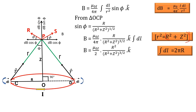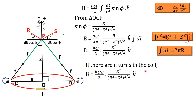Therefore, B equals mu₀ I by 2 times R squared divided by (R² + z²)^(3/2), along unit vector k̂. If there are n turns in the coil, we multiply by n: B equals mu₀ nI by 2 times R squared divided by (R² + z²)^(3/2), along unit vector k̂.